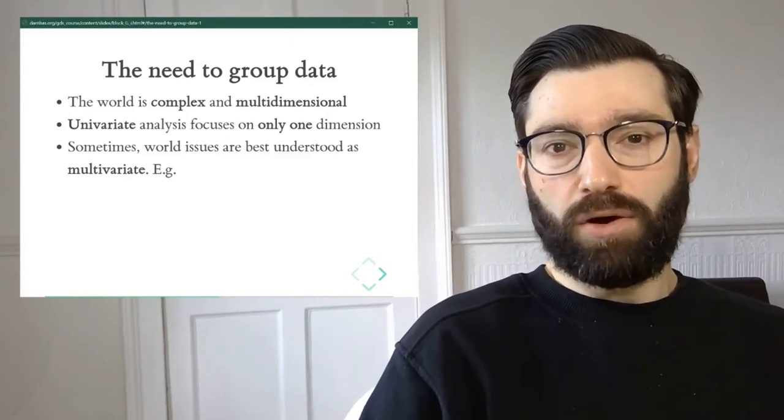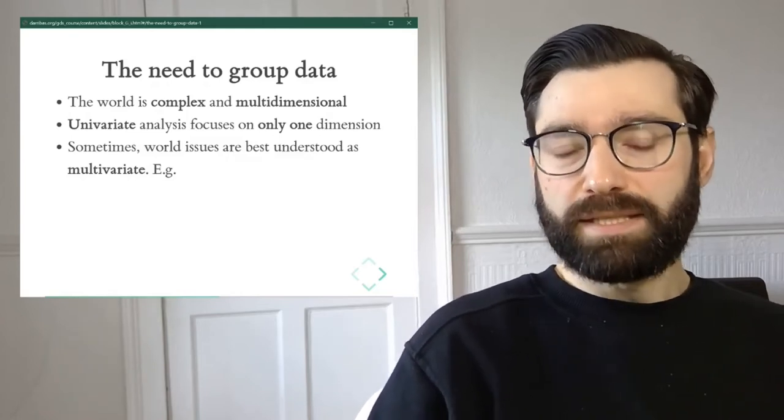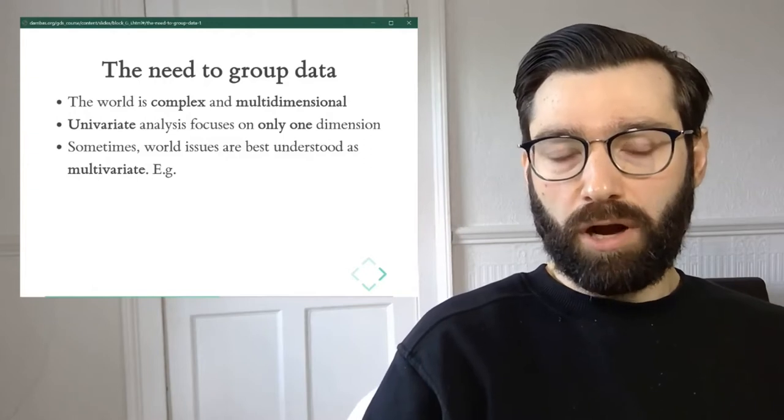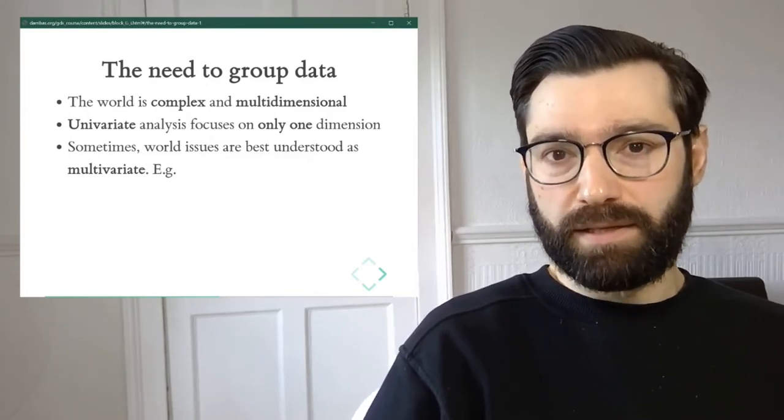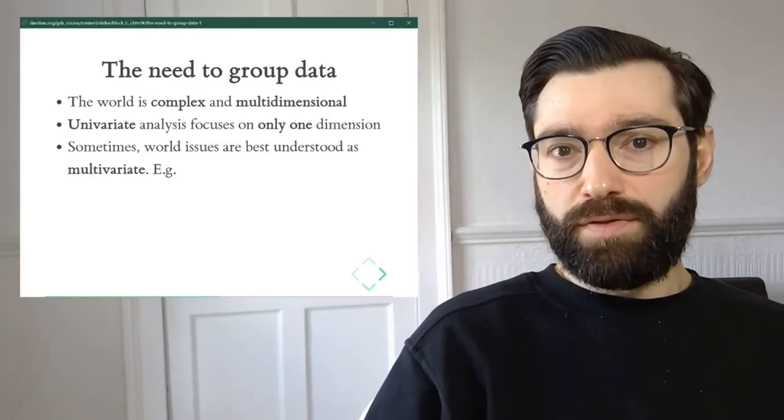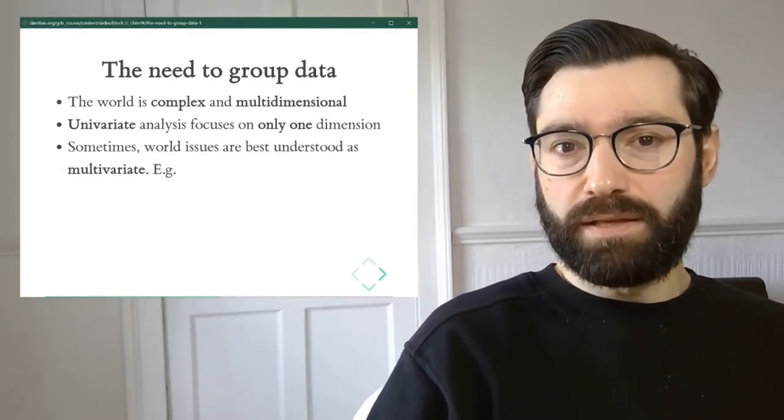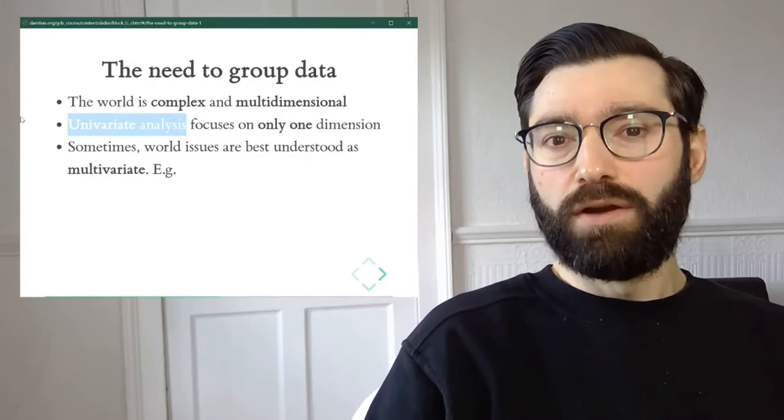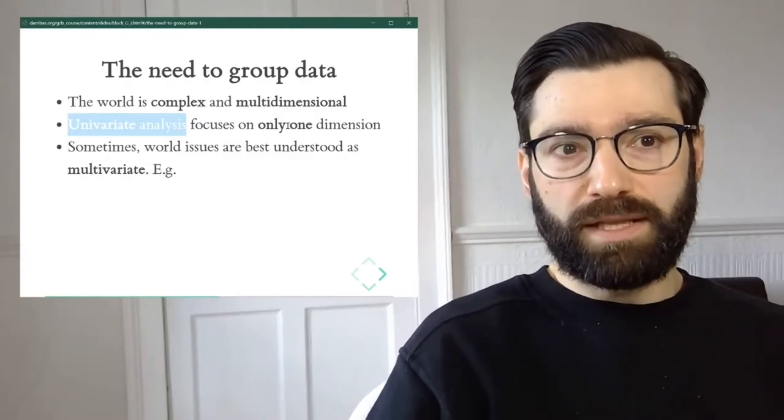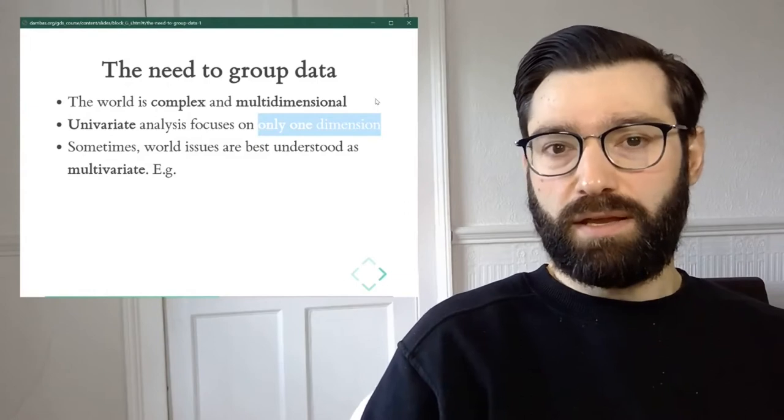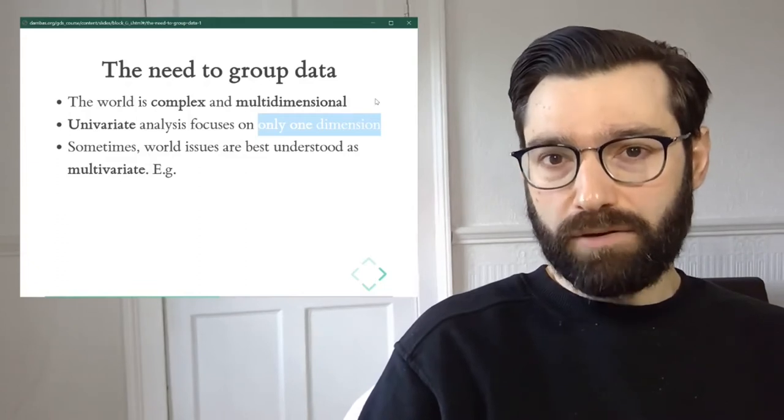The idea that certain phenomena are really complex and to understand them it's important to try to simplify them. But if we continue the process of simplification, at some point we start losing important information. As a social scientist, most of the phenomena we study are complex and multidimensional. This contrasts with much of the statistics that we've actually been seeing in this course. Much of what we've seen falls within the univariate analysis set of techniques, which focuses on studying one single dimension.